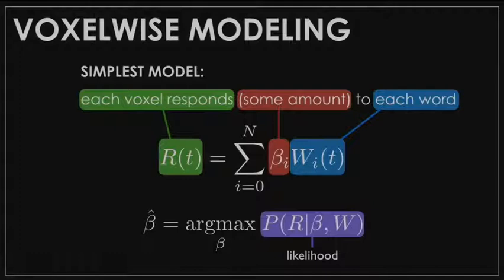The estimation procedure becomes the game of how do you find beta — how do you find the amount that the voxel responds to each word. I'm showing this as a Bayesian optimization issue where we have a likelihood function that gives you the probability of observing some response given the weights and the words. We find the beta that maximizes this likelihood function — this is the same as finding the beta that minimizes the error in our prediction. So we fit this model, test it, take a new 10-minute story, predict responses to that story, and look at how correlated the actual responses are with the predicted responses.